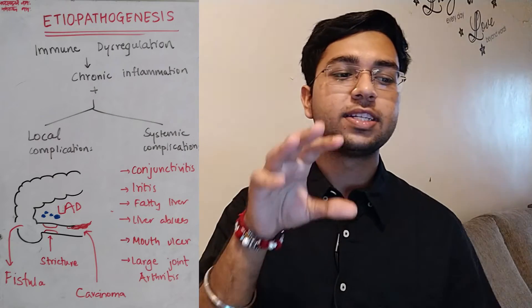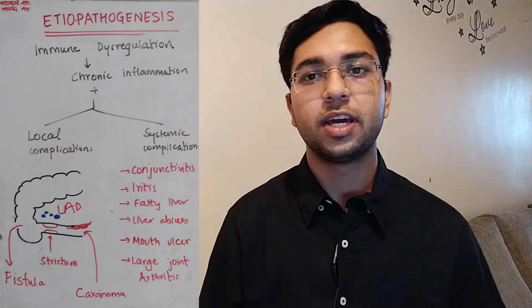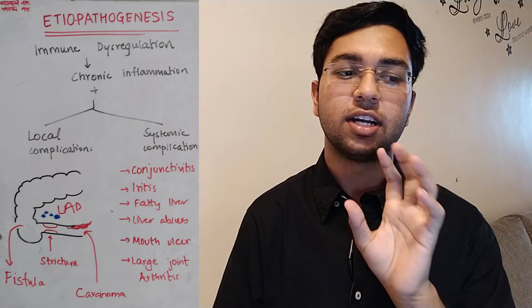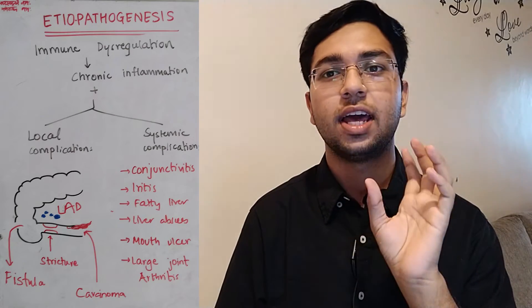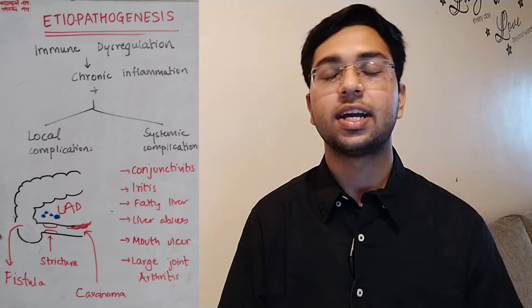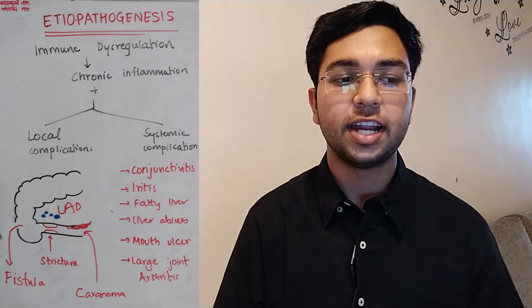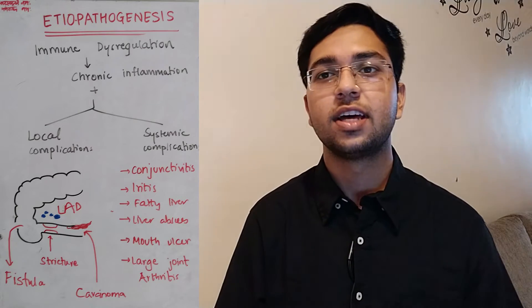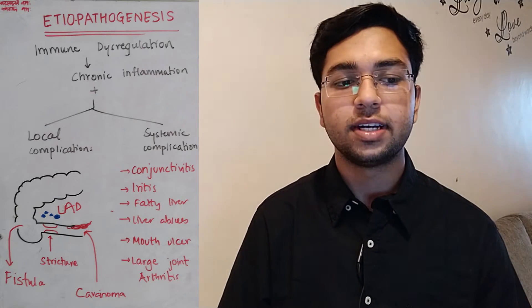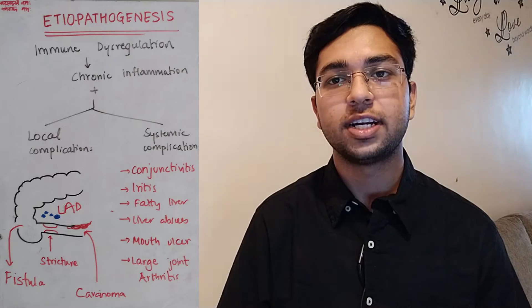Local complications — as you can see in this image — include fistula, stricture, constriction, and local lymphadenopathy. Systemic complications include conjunctivitis, uveitis, iritis, fatty liver, liver abscess, and large joint arthritis. So this was the etiopathogenesis of IBD.